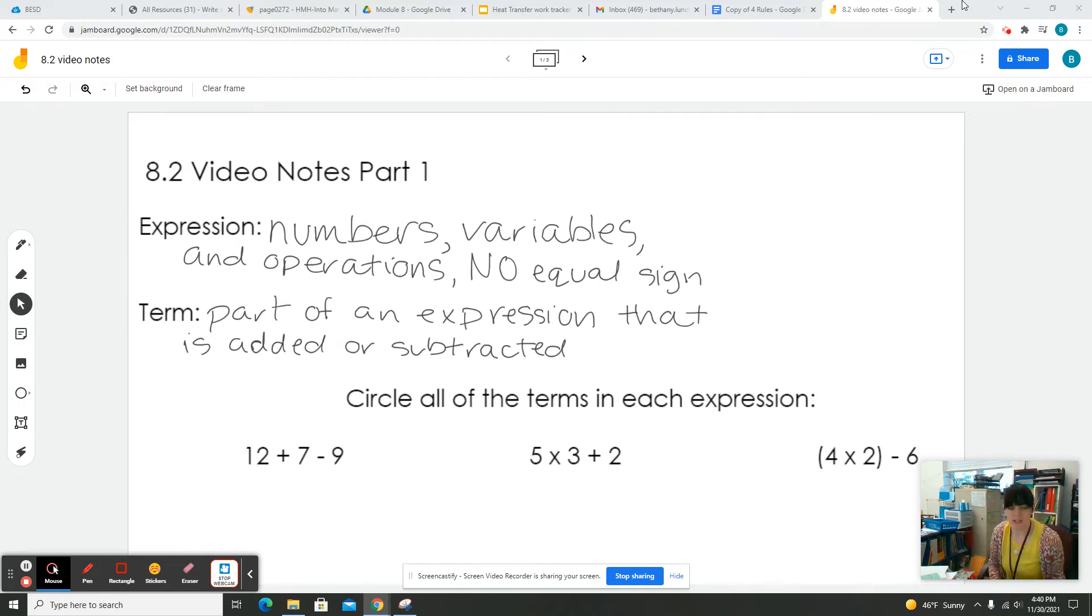In order to understand this a little bit better, let's look at some examples. We're going to circle all the terms in each expression here. So for our first expression, we have 12 plus 7 minus 9. Well, if a term is part of an expression that is added or subtracted, we can see we have an addition sign right here and a subtraction sign right here. And so those are going to separate our terms because it's either added or subtracted. So our terms are going to be our 12, 7, and 9, because the 12, 7, and 9 are all separated by an addition sign and a subtraction sign.